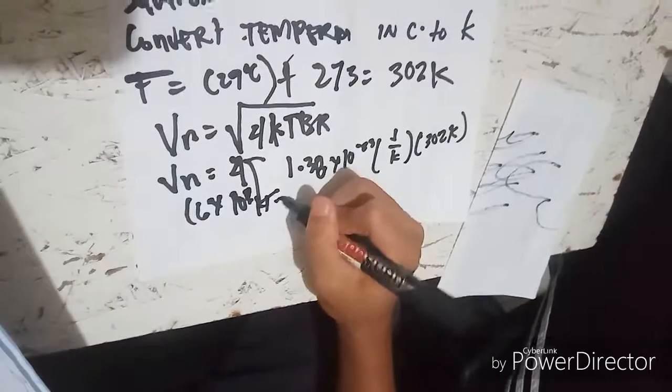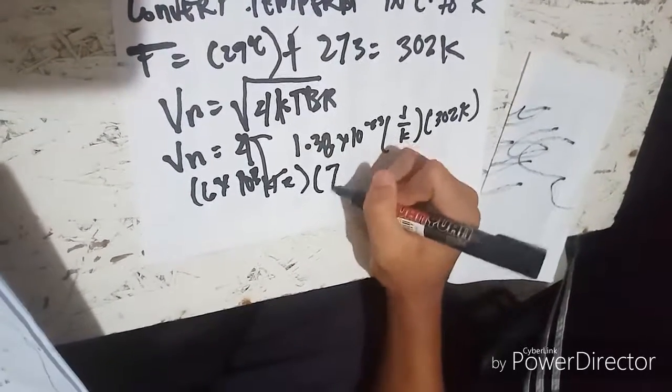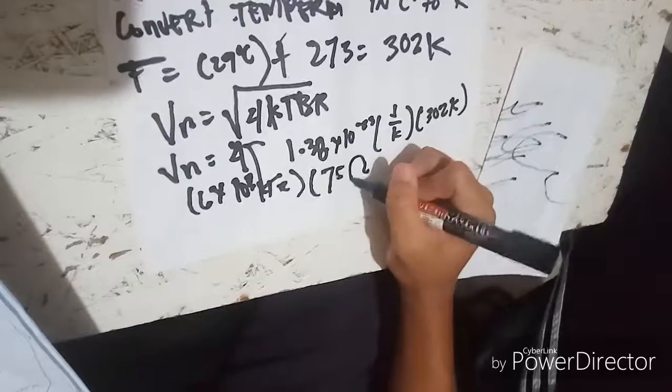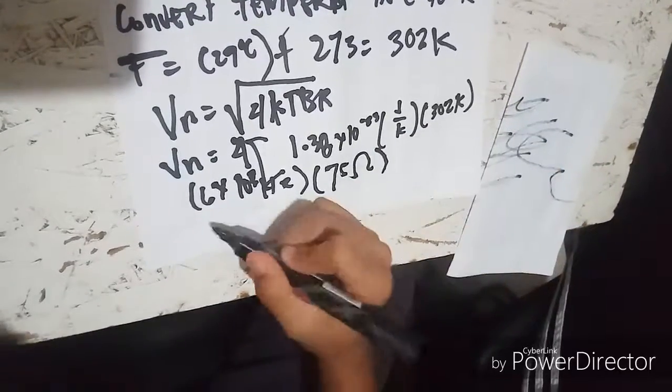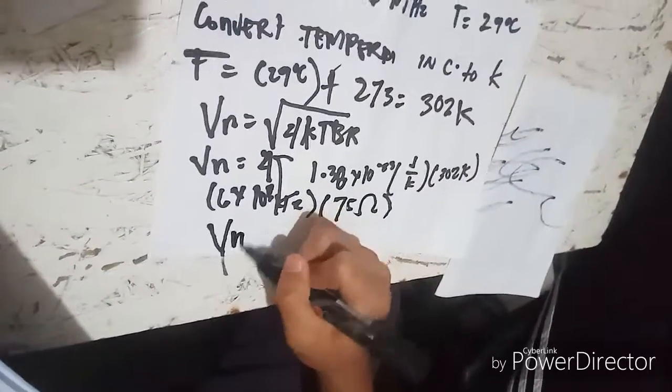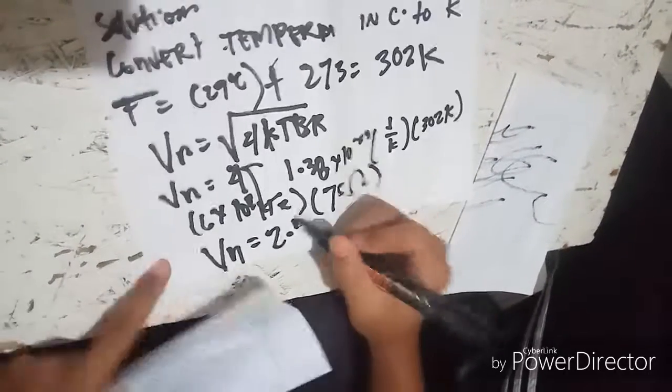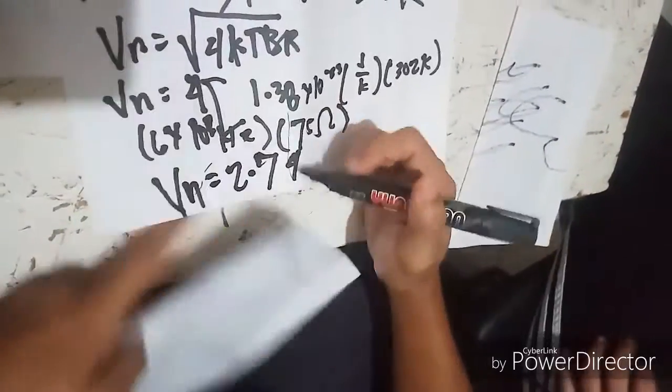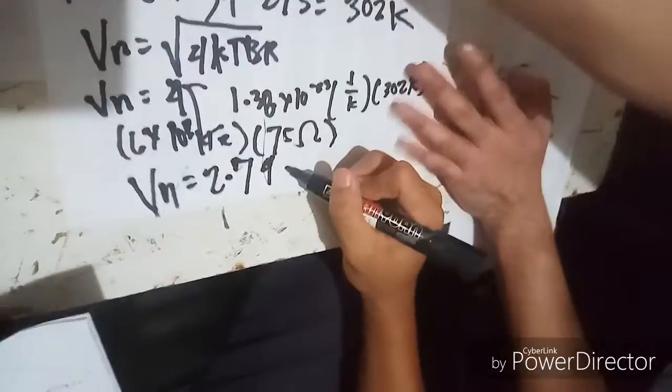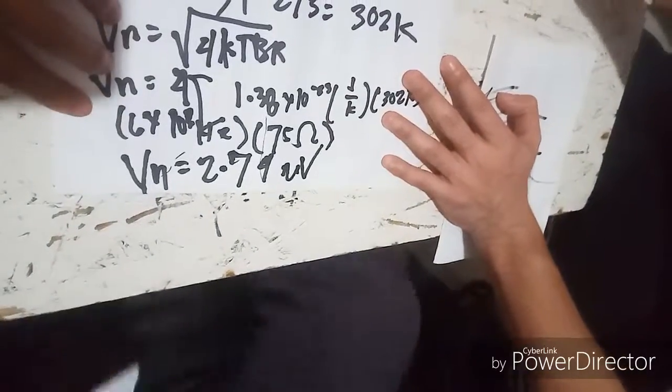V_n is equals to 2.74 microvolts. Thank you, it's done.